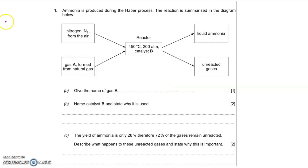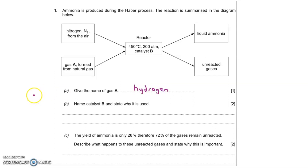In this first practice question, we have a diagram which summarizes the Haber process — the production of ammonia. The first part of this question asks you to give the name of gas A. Gas A is formed from natural gas, which is one of the raw materials, so gas A is hydrogen. One mark if you said hydrogen.